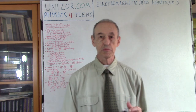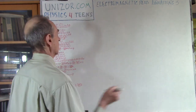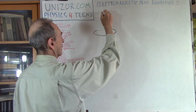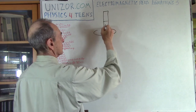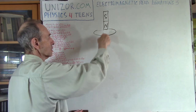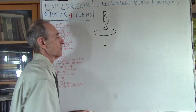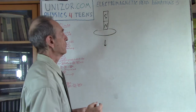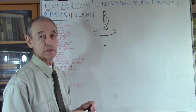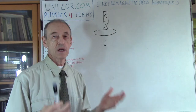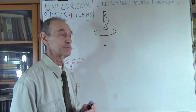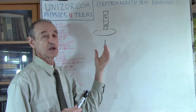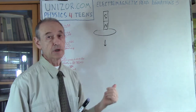I will just remind you of one particular experiment. It's very simple. You have a wire loop and a permanent magnet which you are moving down. As soon as you move it down, inside the ring an electric current will be generated. That's basically the concept of induction — whenever a changing magnetic field induces electric current in the wire.